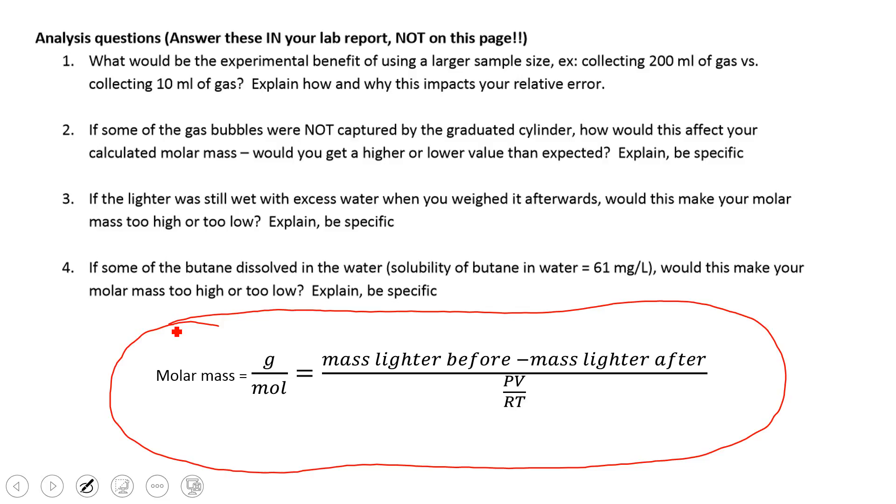And then the way that we found moles was using PV equals nRT. So if you rearrange and solve for n, that's P times V divided by R times T. So here's all the numbers that go into your calculations.